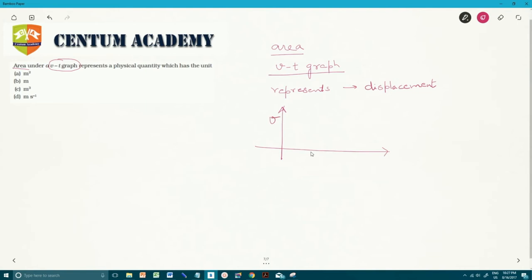Let's say this is V and this is T, and this is how the Vt graph looked like. So basically if you want to find out the displacement covered from time t equals to 0 to time t equals to T, let's say this is time t equals to T.